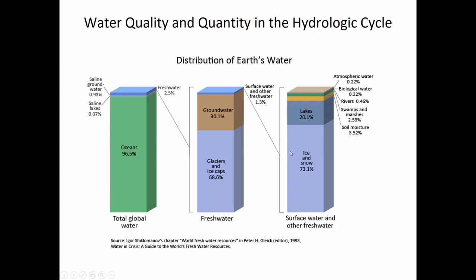Surface water — the kind we have just 200 yards to our north in the Ohio River — is only 1.3% of 2.5% of all earth's water, and a lot of that is ice and snow. There's a very small fraction of earth's water that is fresh, yet all we need to do is add some coagulant, settle out the colloids, and it's ready to drink. This emphasizes what a pity it is when we use rivers as a place to dump waste — we need to preserve that resource for higher purposes.